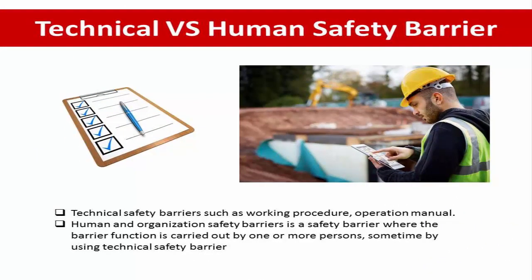Technical and human or organizational safety barriers: a technical safety barrier is one where the barrier function is performed by a technical system, such as working procedures or operation manuals. A human and organizational safety barrier is one where the barrier function is carried out by one or more people, sometimes using technical safety barriers as well.